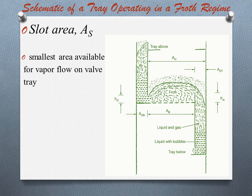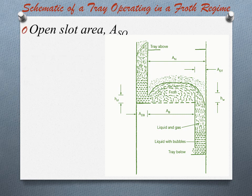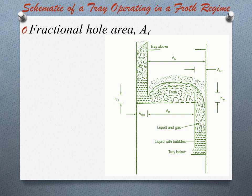Next is open slot area, which is denoted by ASO. This area is the slot area when all valves are open. Next is fractional hole area, which is denoted by AF. This is the ratio of hole area to bubbling area for sieve trays, or slot area to bubbling area for valve trays.